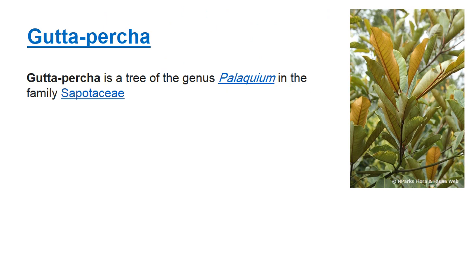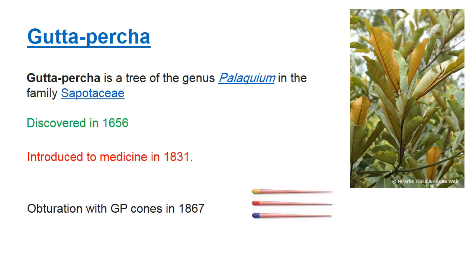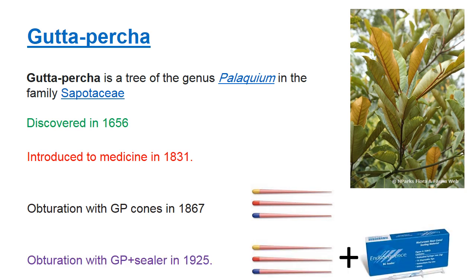Gutta-percha comes from a tree of the genus Palaquium in the family Sapotaceae. It was discovered in the 1600s and introduced to medicine in the 1800s. Gutta-percha cones were made in 1867, and in 1925 the combination of cones with sealer was introduced.